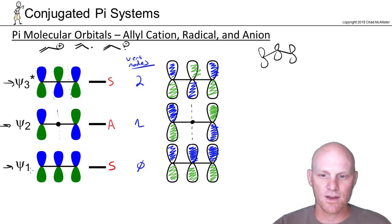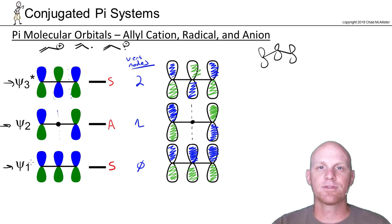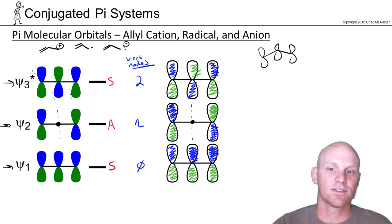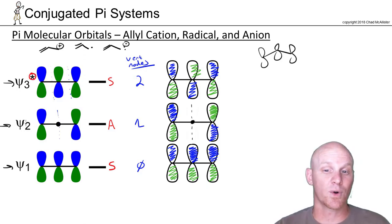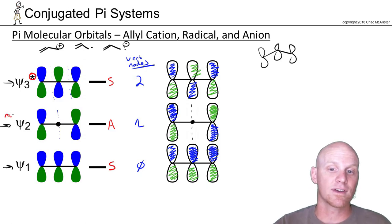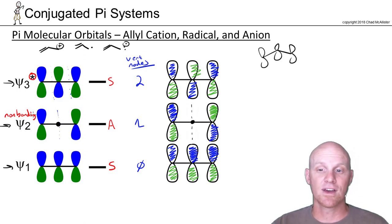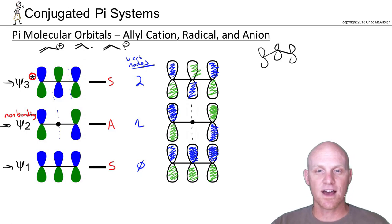One other thing to note: we said that the lower half of your molecular orbitals are bonding and the upper half are antibonding. But what if you have an odd number? In this case, Ψ1 is bonding, Ψ3 is antibonding, but Ψ2 is right in the middle — it's not in the upper half or the lower half. It turns out Ψ2 is going to be non-bonding, like the equivalent of just a lone pair of electrons on an atom — non-bonding electrons. So it's not bonding, it's not antibonding, it's non-bonding. That's the second funky thing you see when you've got an odd number of p-orbitals involved in your conjugated system.